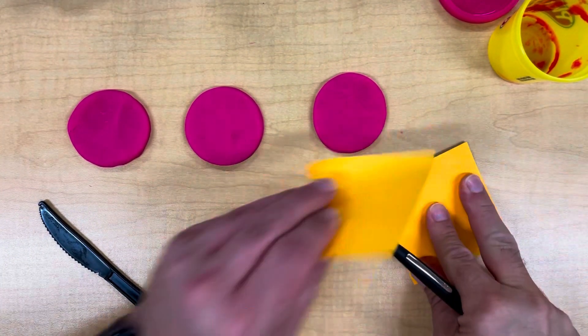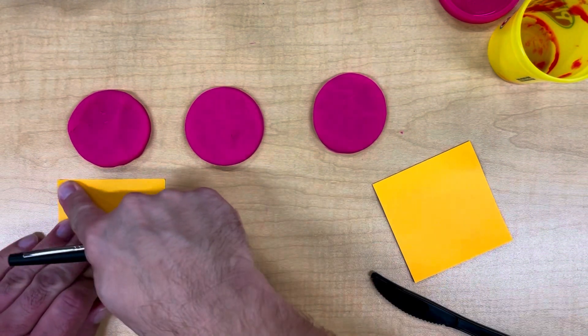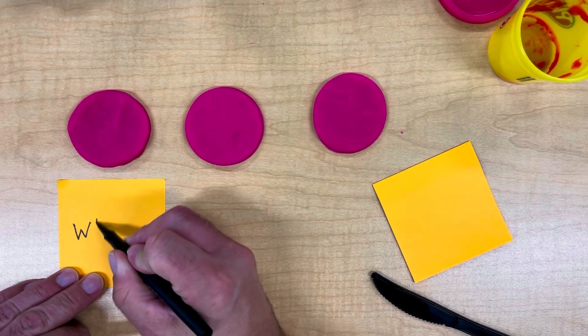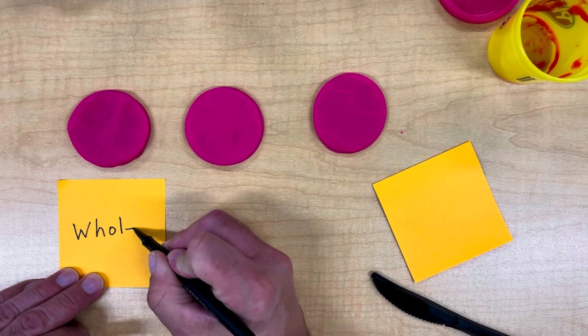We're going to use a post-it to label our first circle as a whole. This means we will not be cutting this circle.